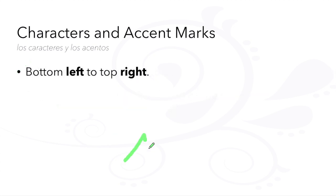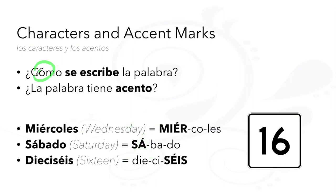Accent marks appear over vowels and are formed from the bottom left to the top right. ¿Cómo se escribe la palabra? ¿La palabra tiene acento? Miércoles. Sábado. Dieciséis.